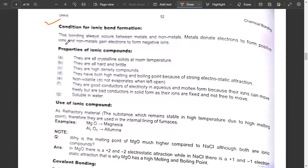Now properties of ionic compounds: they are all crystalline solids at room temperature. They are all hard and brittle, high density compounds. They have high melting and boiling points. Why? Due to strong electrostatic attraction. Ionic compounds have high MP and BP because they have strong electrostatic forces of attraction.